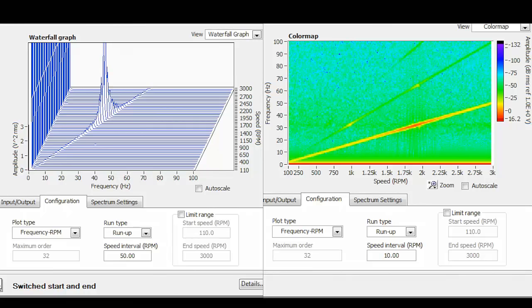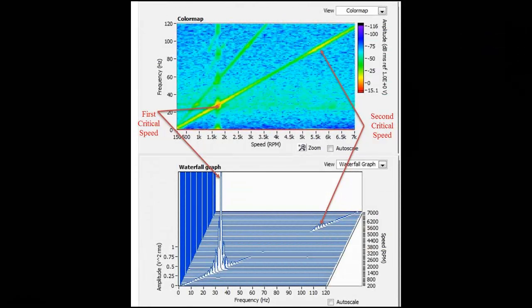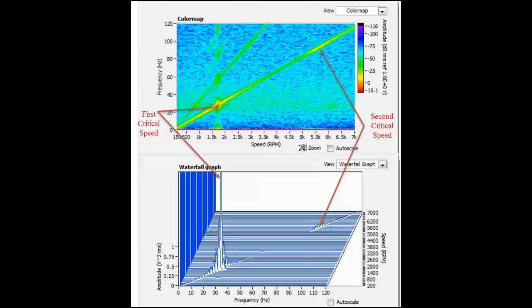The red spot in the color map corresponds to the critical speed zone and highlights the range of speed at which large amplitude of vibration is experienced. This can also be seen in the waterfall plots.